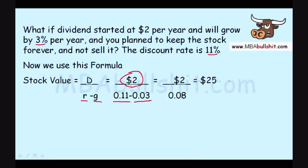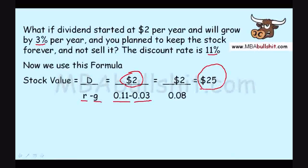In this case, if you remember, in the market the stock was being sold for $24. If it's being sold in the market for only $24, but the fair stock value to you is $25, then that means it's good to buy it at $24, because the stock is worth more than $24 to you. It is actually worth $25 to you.